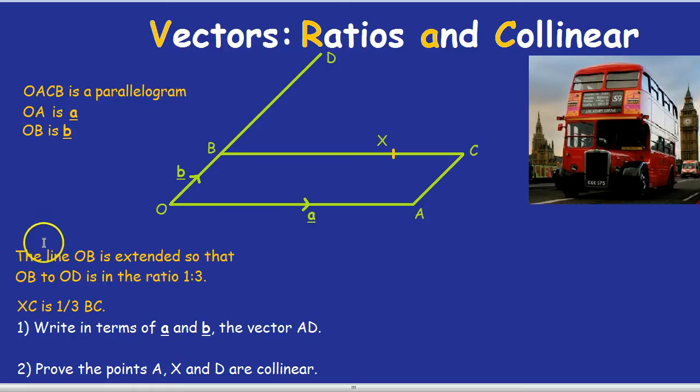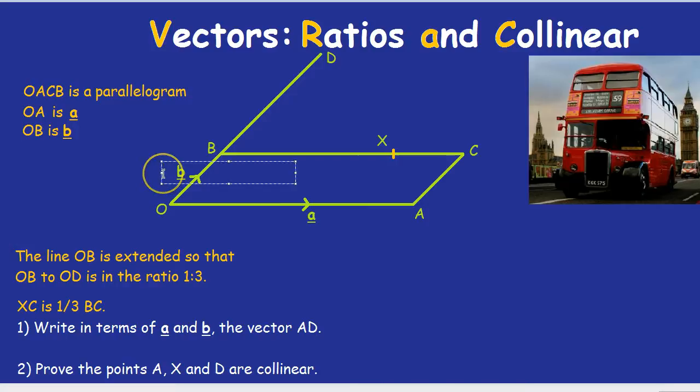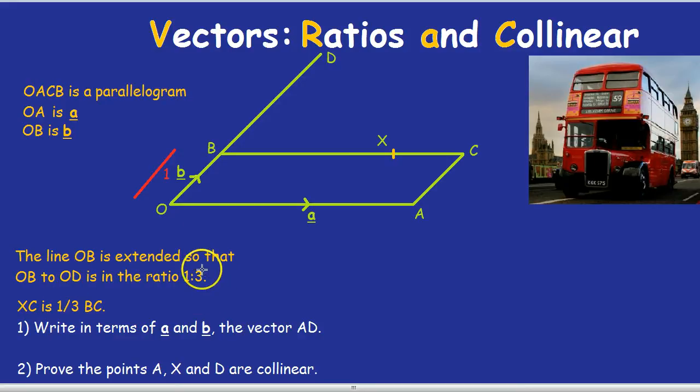The line OB is extended so that OB to OD is in the ratio 1 to 3. Let's look at it. OB to OD in the ratio 1 to 3. What I would always do is label it so we can see what we're doing. OB is the first one, so that's the 1. So let's label it 1 in red. And we can do a little line as well. OD is the second one, so it's the ratio 3. So let's label that all the way from O to D is 3.